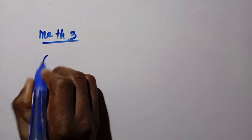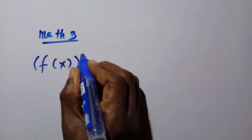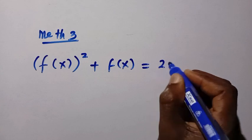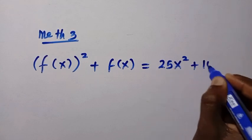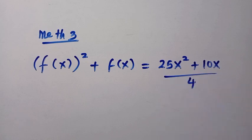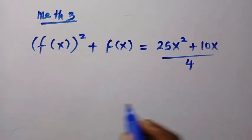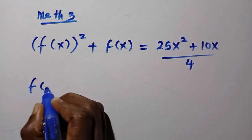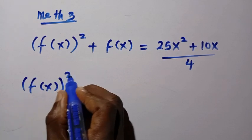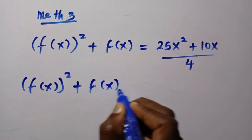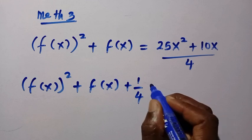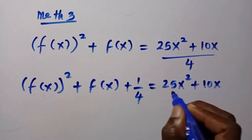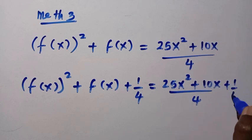For method 3, we have the question: f of x squared plus f of x equals 25x squared plus 10x divided by 4. To both sides let's add 1 over 2 squared, which is 1 over 4. By adding that we have f of x squared plus f of x plus 1 over 4 equals 25x squared plus 10x over 4 plus 1 over 4.